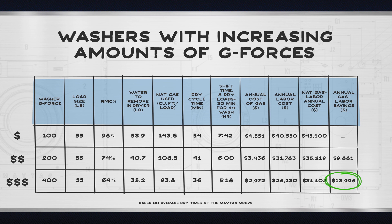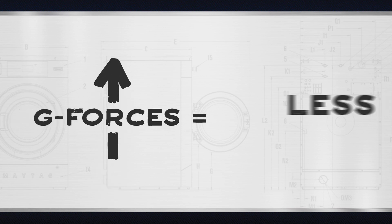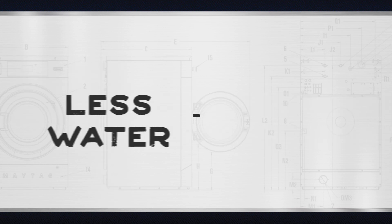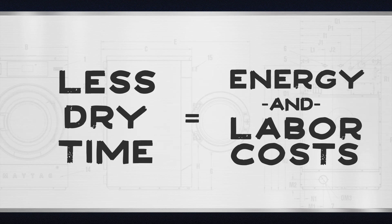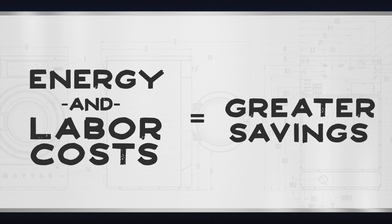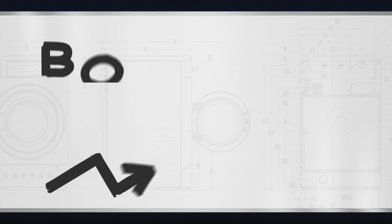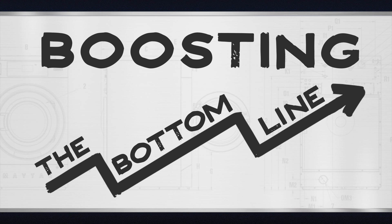So the next time you're considering or discussing multi-load commercial equipment, remember more g-force means less water at the end of the spin cycle. Less water means less dry time. Less dry time means lower utility costs and lower labor costs, which all adds up to greater savings. Now that's what we call boosting the bottom line.